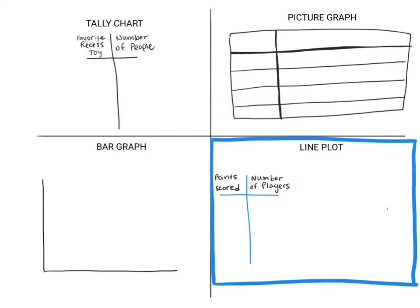All right, guys. So we've been talking about different types of graphs in math for the last couple of weeks. We've talked about a tally chart, a picture graph, a bar graph, and a line plot. Remember that a graph is just a representation of data — something visual that we can see patterns and trends that we wouldn't be able to see if all the pieces of data were separate. Data is just a piece of information we've gotten from a survey or another source.